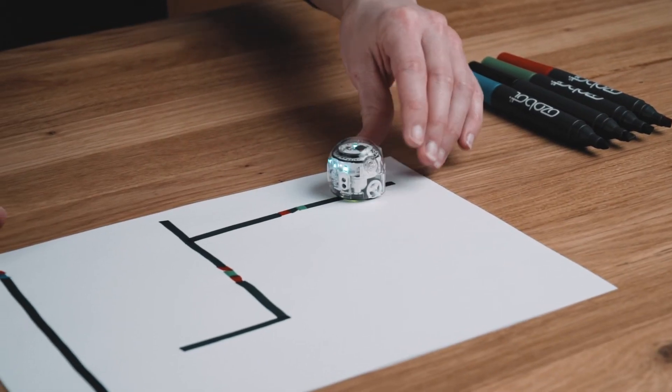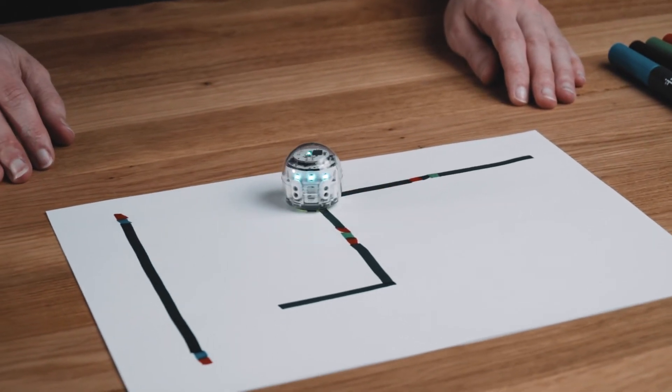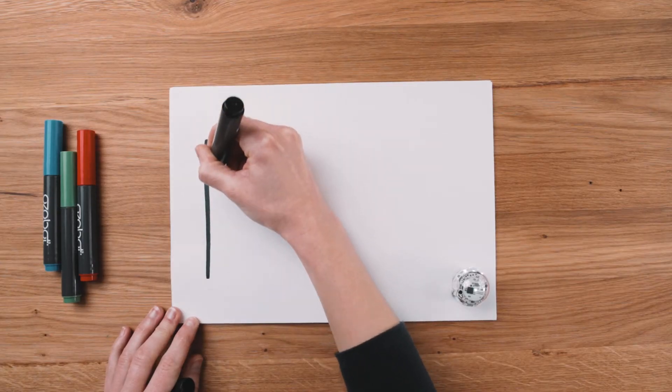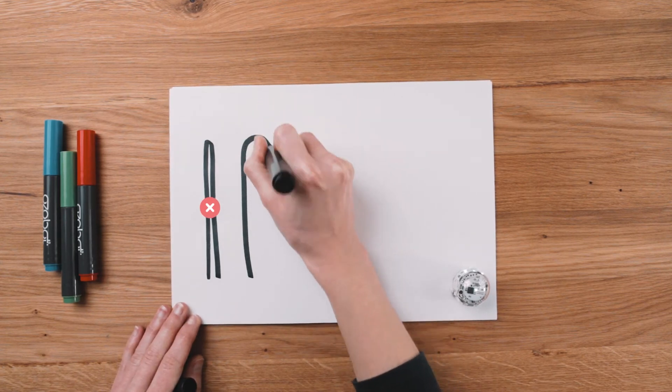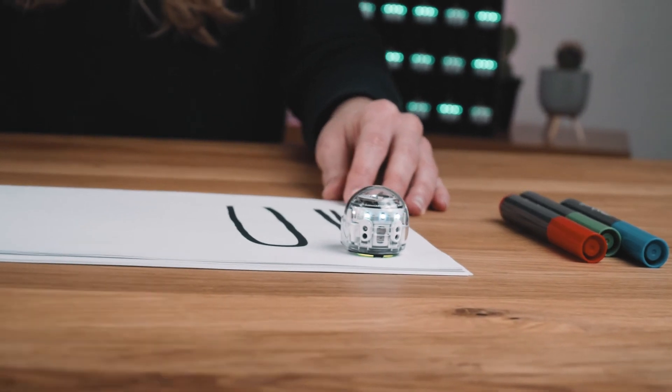Evo doesn't just follow straight lines. You can create corners and curves in your paths. Just make sure your curves aren't too sharp, or Evo might read it as the end of a line and think there's nowhere else to go.